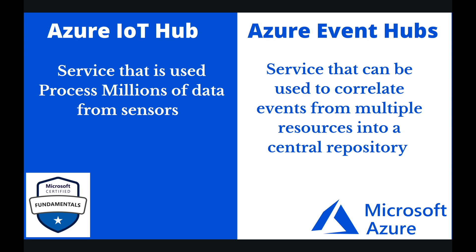IoT Hub is a service that is used to process millions of data points from sensors. Whereas Event Hub is used to correlate events from multiple resources into a central repository.